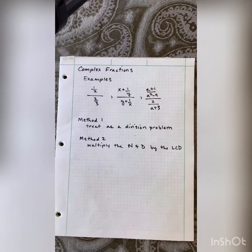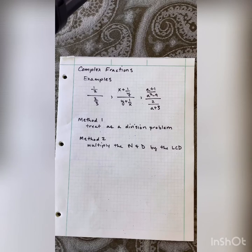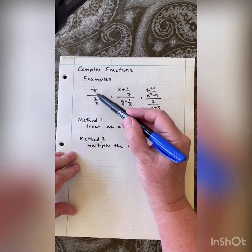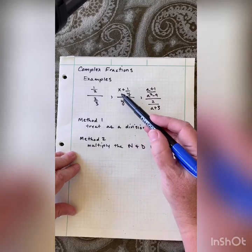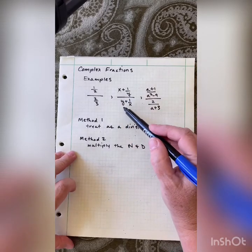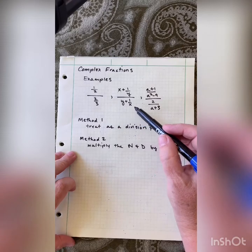Good morning. Today we're going to be working on complex fractions. A complex fraction is a fraction or a rational expression that contains other fractions in its numerator or denominator — so it's a fraction in a fraction. Here are some examples: you could have something like one-half over two-thirds, or x plus one over y, over y plus one over x.